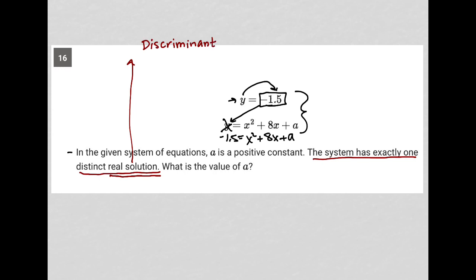The discriminant is a formula, b squared minus 4ac. And that formula gives us quite a bit of information in terms of the types of solutions that we expect from a quadratic equation. If b squared minus 4ac is greater than zero, we expect to get two real solutions. If b squared minus 4ac is equal to zero, we expect to get one real solution. And if b squared minus 4ac is less than zero, we expect to get no real solutions. So because the question says we have exactly one distinct real solution, we are here in the middle category.